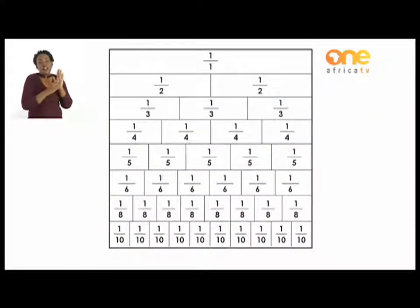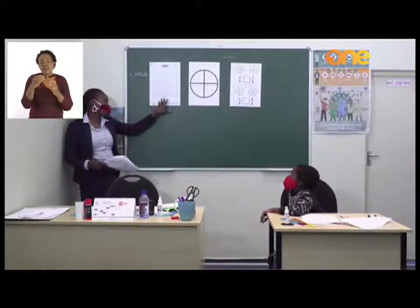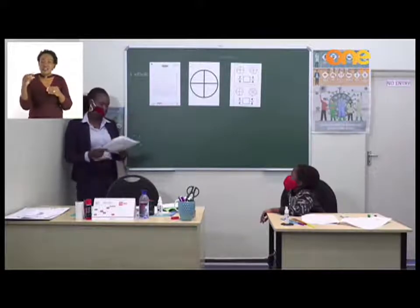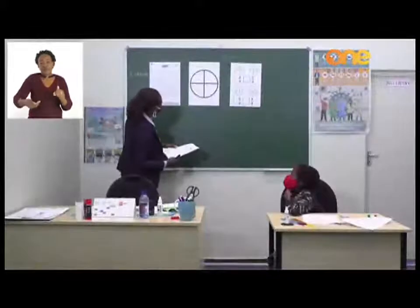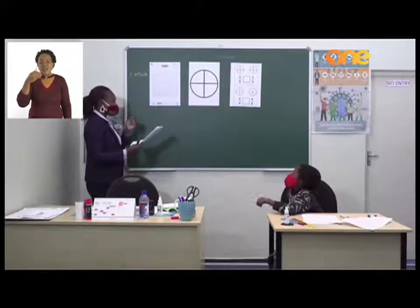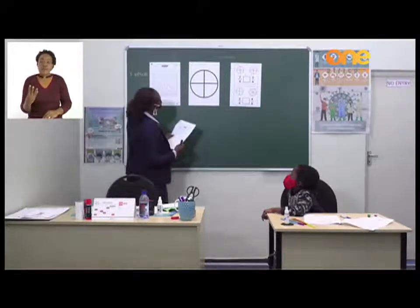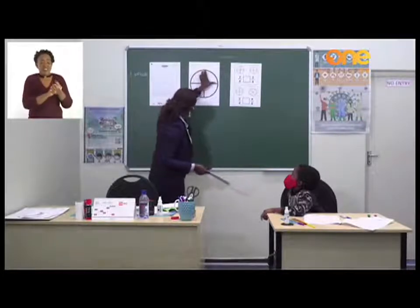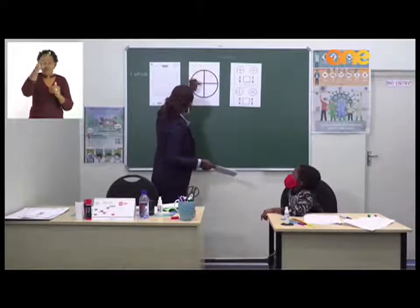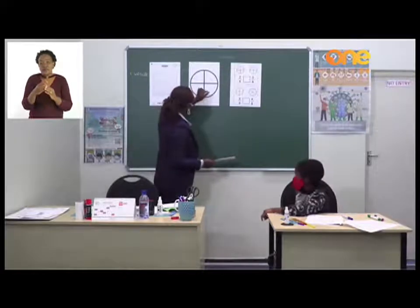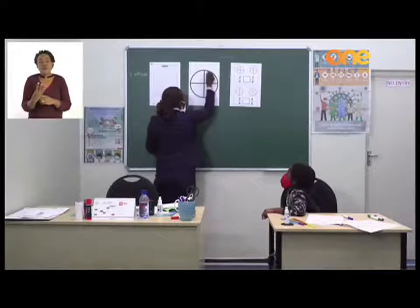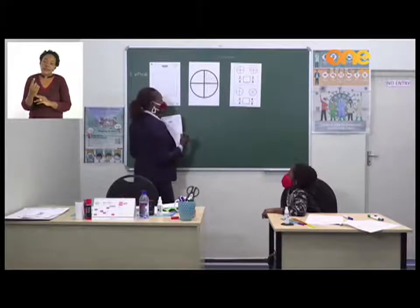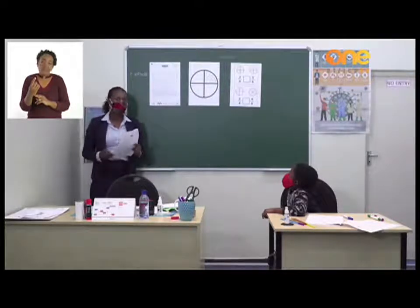You must also try to draw the fraction chart, grade twos. Grade threes, you can use it for your revision. Let's now turn to page 11, where we are going to color the fractions. I have my picture here — it's a pizza. We want to color one over four, which means we eat one part out of one, two, three, four. We don't say one over three, we say one out of four. So we color one over four like this.